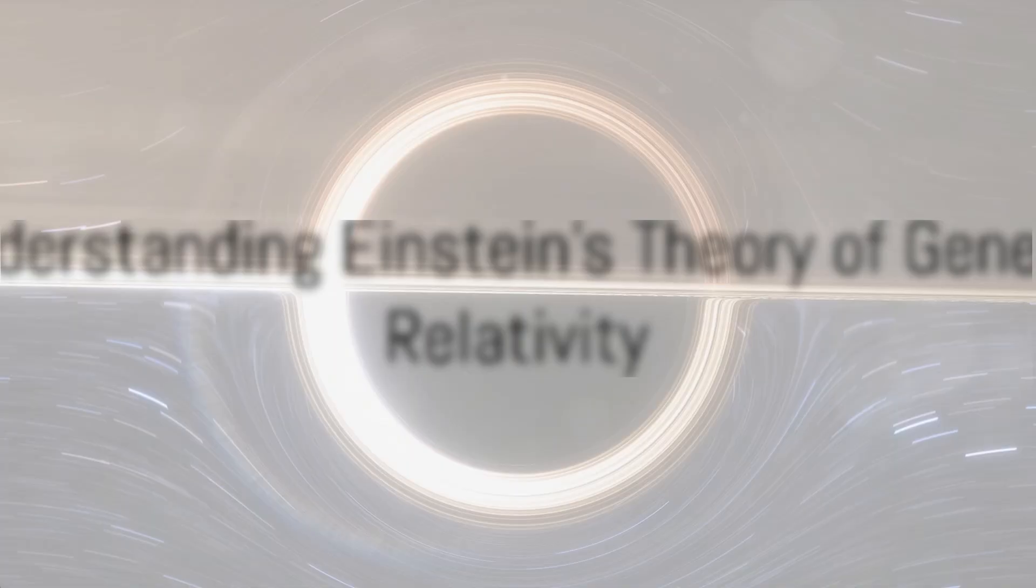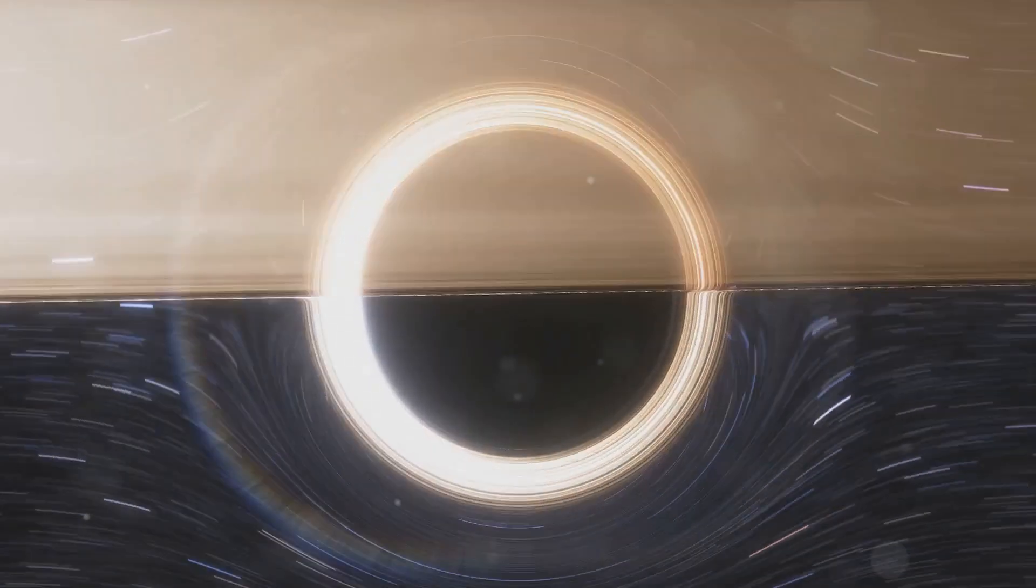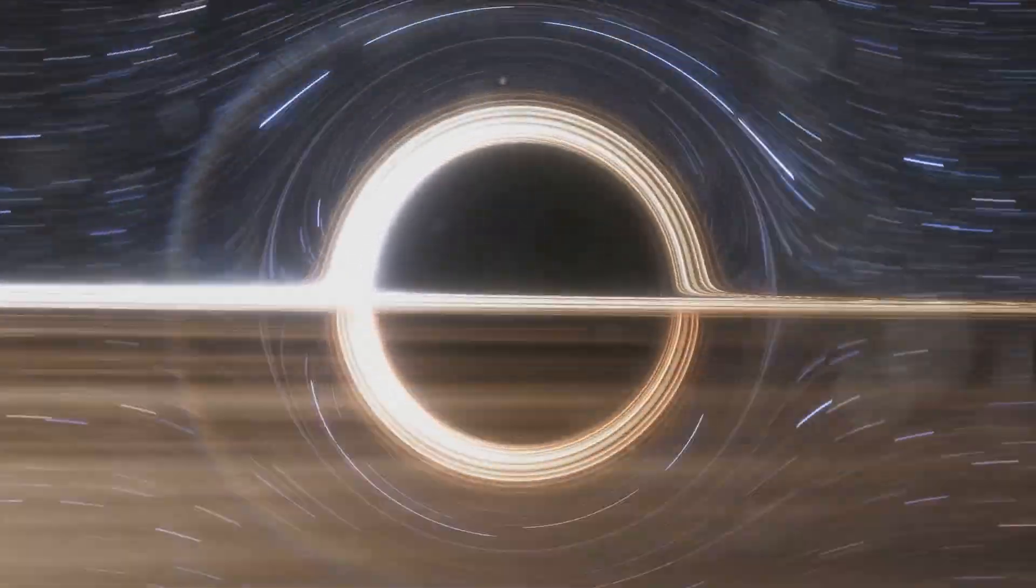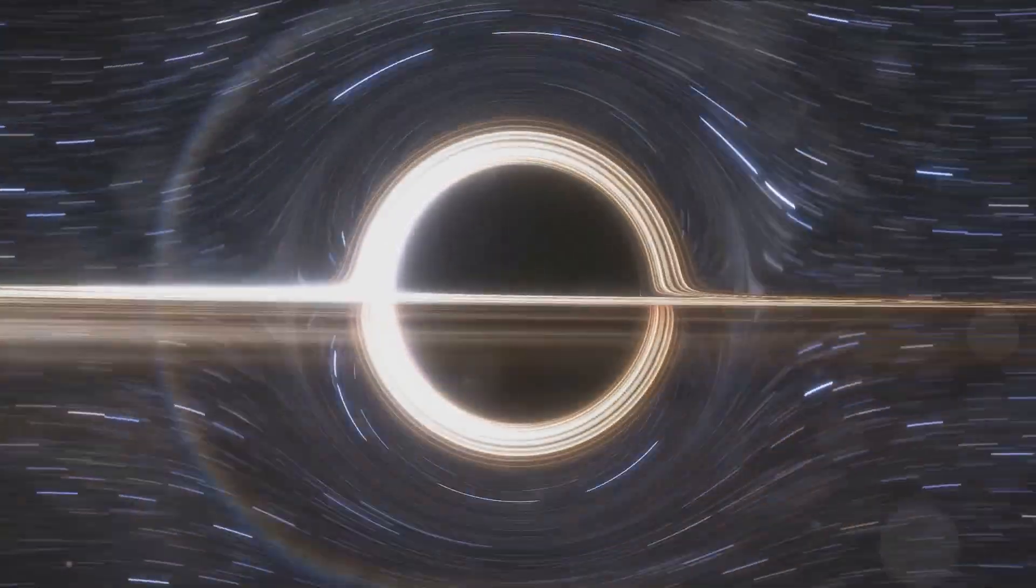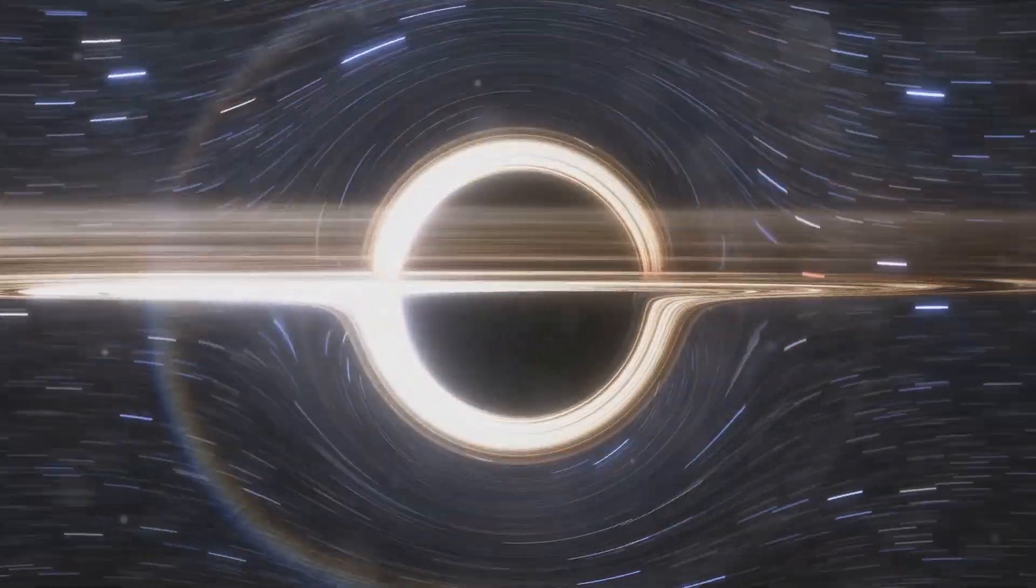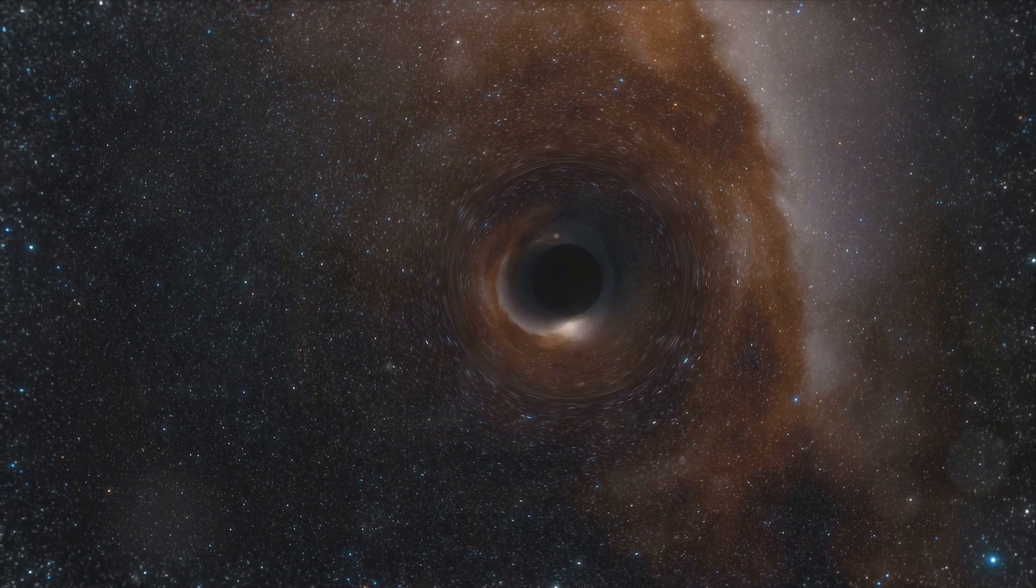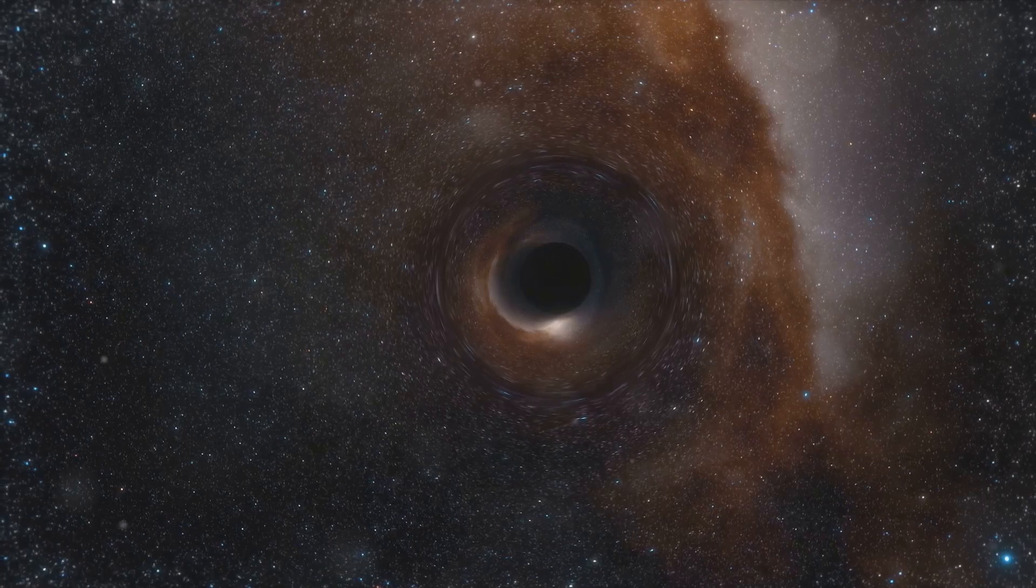The Einstein Scalar theory, in essence, is a modification of Einstein's theory of general relativity. Einstein's theory of general relativity describes gravity as a curvature in space-time caused by mass and energy. It's like a bowling ball resting on a trampoline, causing it to dip.